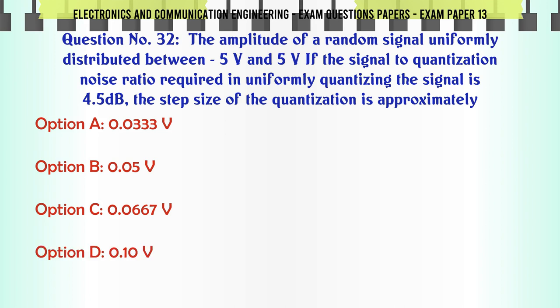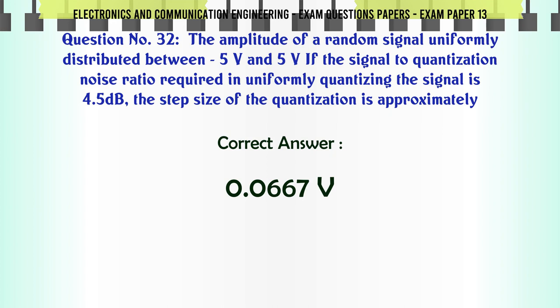The amplitude of a random signal uniformly distributed between negative 5V and 5V. If the signal to quantization noise ratio required in uniformly quantizing the signal is 43.5 dB, the step size of the quantization is approximately: A: 0.0333V, B: 0.05V, C: 0.0667V, D: 0.10V. The correct answer is 0.0667V.